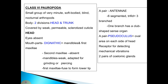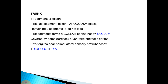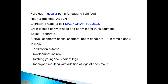A pair of antennae is present, which are six-segmented and trifid — that is, three-branched. One branch has a club-shaped sense organ. A pair known as pseudoculi is a novel area on each side of the head, serving as a receptor for detecting mechanical vibrations. The head also contains two pairs of coelomic glands. The trunk contains eleven segments and a telson. The first and last segments and telson are apodous — meaning legless. The remaining nine segments each contain a pair of legs, and the first segment forms a collar behind the head. Five tergites bear paired lateral sensory protuberances called trichophodia.